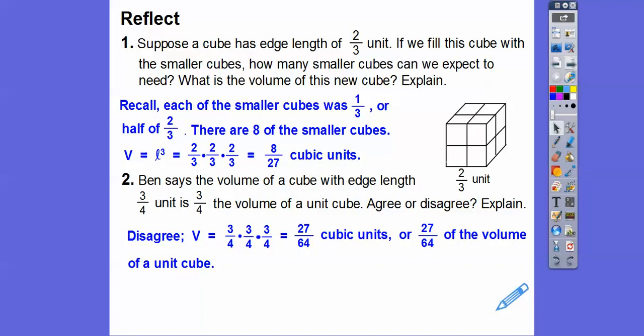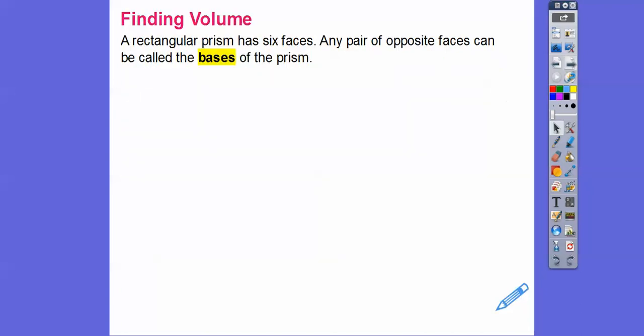So I'm going to disagree, you guys. 3/4 times 3/4 times 3/4. 3 times 3 times 3 is 27. 4 times 4 is 16. 16 times 4 is 64. So the volume, if that's what it is, 3/4 of a unit, the volume is going to be 27/64ths of the cubic unit. Here, the unit cube.